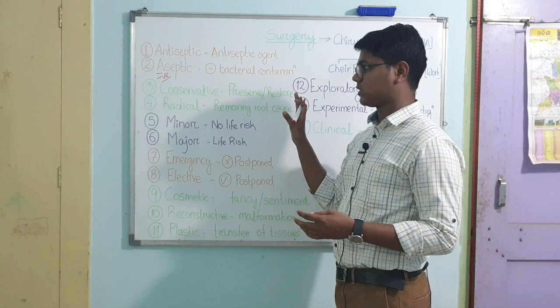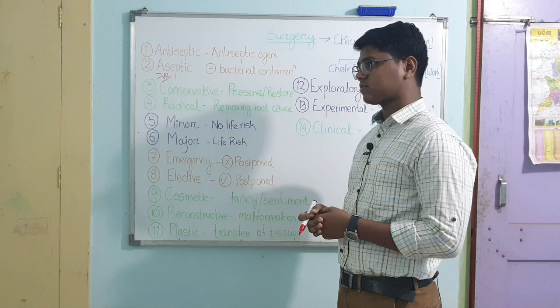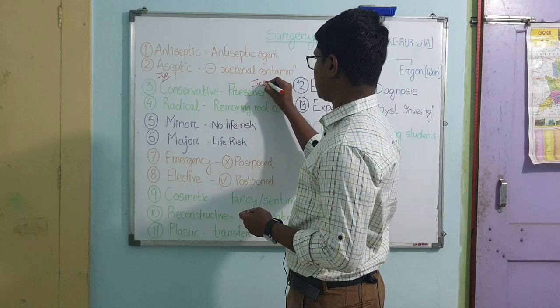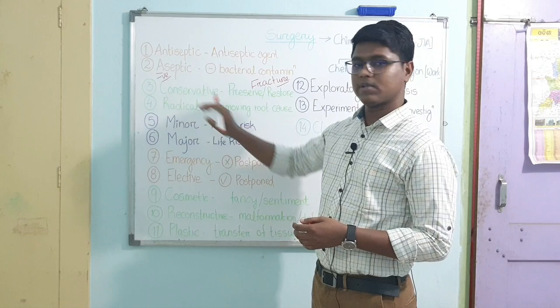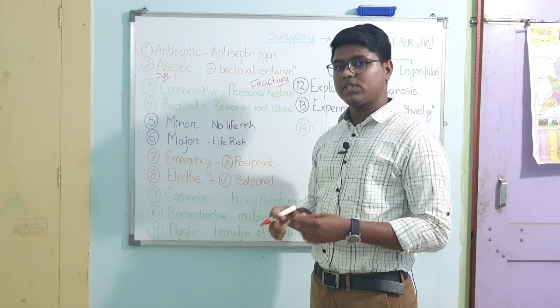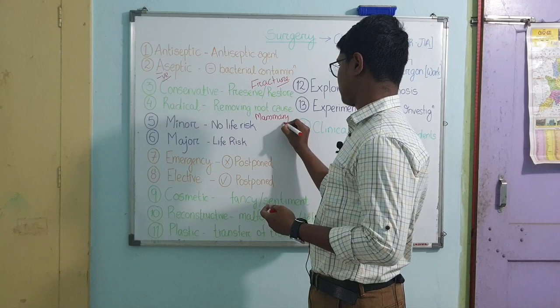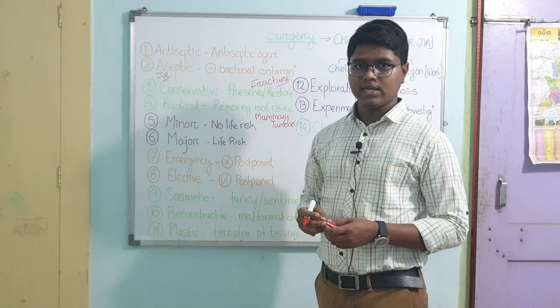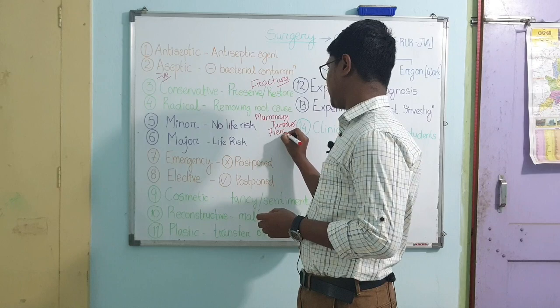Next, constructive and radical surgery. Constructive surgery means you perform surgery to restore or preserve an organ — suppose a case of fracture of metacarpal or metatarsal bone, you try to preserve it; that is conservative surgery. In radical surgery you remove the root cause; sometimes you have to remove organs. For example, in a mammary tumor case you cannot perform conservative surgery — you have to remove the whole mammary gland. Hernia repair can also be an example of radical surgery involving hernioraphy.